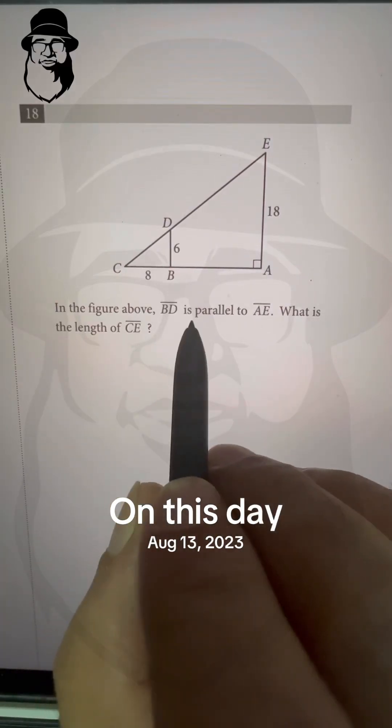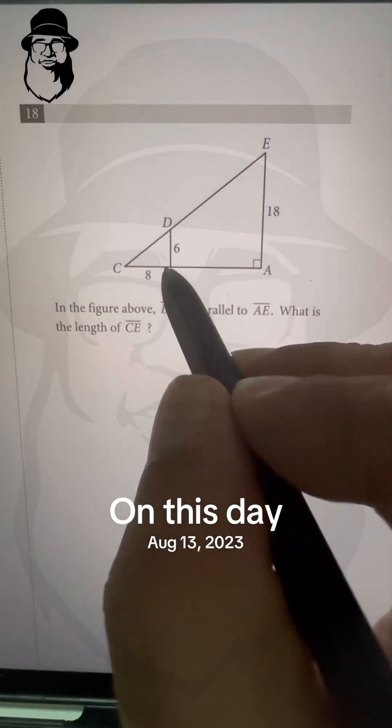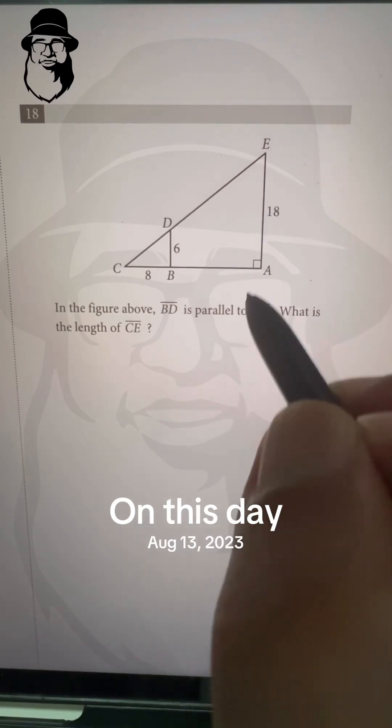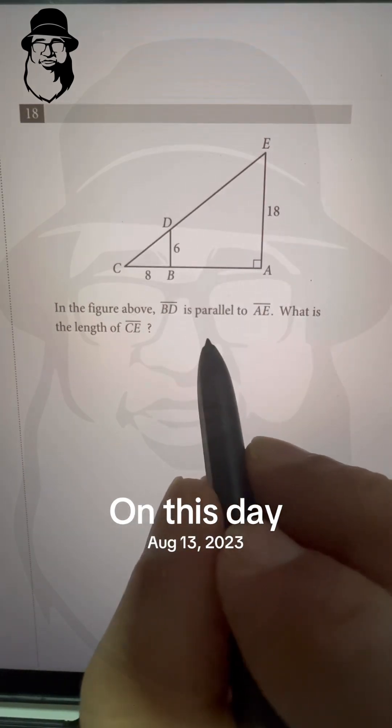In the figure above, BD is parallel to AE. This is BD. This is parallel to AE. This is 18. And what does that mean?